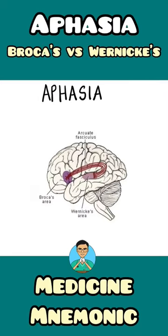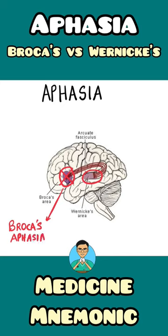Damage to the language areas of the brain causes aphasia. The language areas are Broca's area and Wernicke's area. Damage to Broca's area will cause Broca's aphasia, and damage to Wernicke's area will cause Wernicke's aphasia.